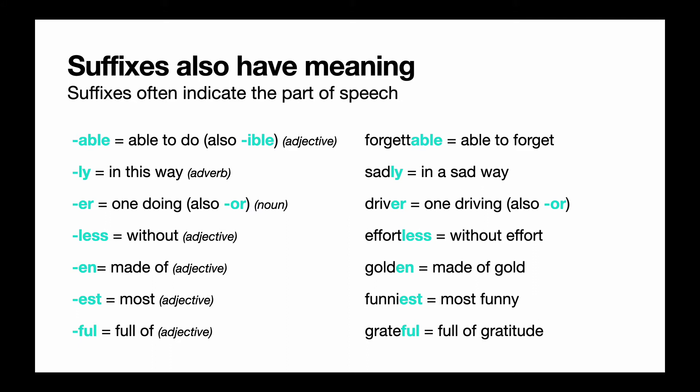So suffixes also have meaning. And when you look at a suffix, it can help you understand the part of speech, which is something we talked about in grammar lesson number one. A-B-L-E or I-B-L-E, pronounced '-ible' or '-able,' means you're able to do something. So if something is forgettable, then you're able to forget it. The ending '-ly' shows us that something is an adverb. So if you do something sadly, you do it in a sad way.